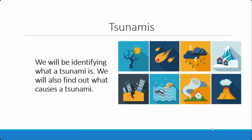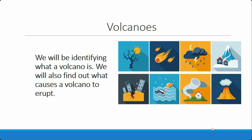Afterwards we're going to be tuning into tsunamis as the next natural disaster, also looking at the form and causation of a tsunami. Then we're going to be looking at volcanoes — seeing what causes a volcano to erupt, where volcanoes are located around the world, and identifying the form and function of a volcano.